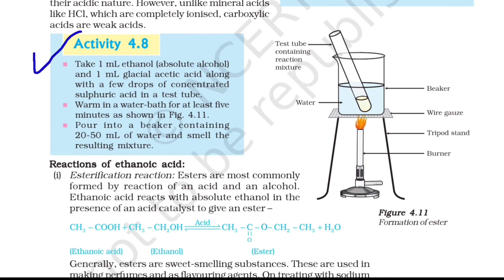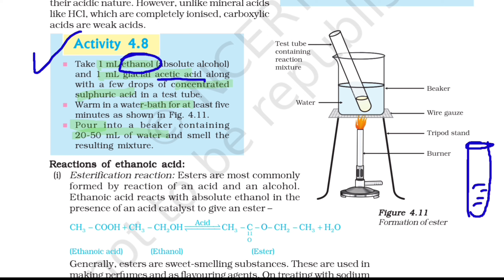Now let's do Activity 4.8. In this activity we will have to take 1 ml of ethanol and 1 ml of acetic acid, and add a few drops of concentrated sulfuric acid. We will warm it in a water bath, and after that pour this solution into a beaker containing 20 to 50 ml of water and smell the resulting mixture. We take one test tube, add 1 ml of ethanol and 1 ml of acetic acid into it, then add the concentrated sulfuric acid and mix.